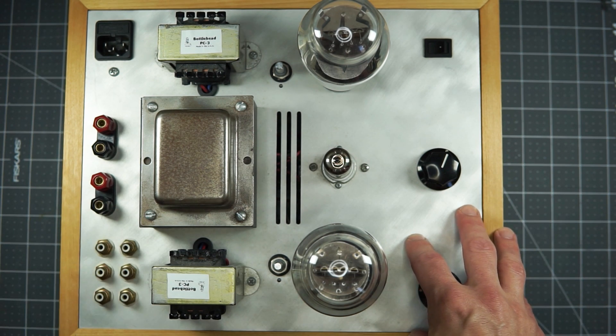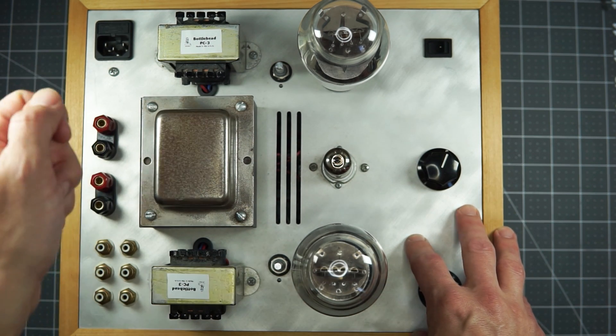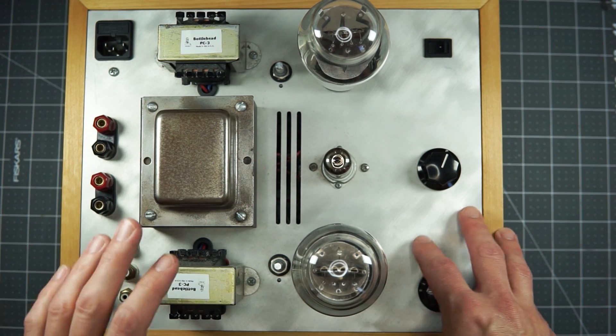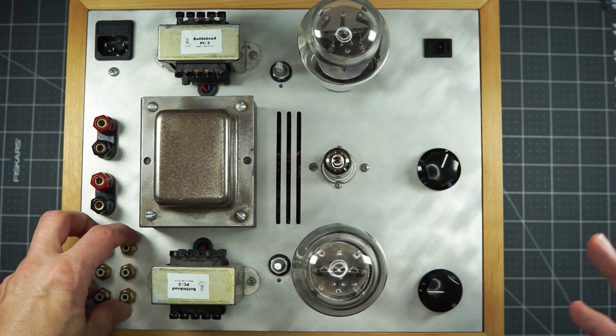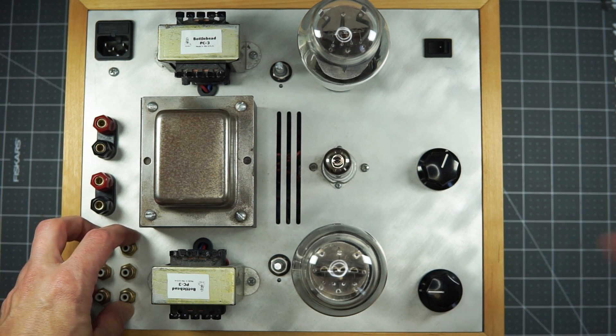So would you buy just a power amp, which would basically have like RCA jacks in, speaker taps out? That's it. Just dumb muscle. And then you're putting a preamp to do volume control and source management in front of it.